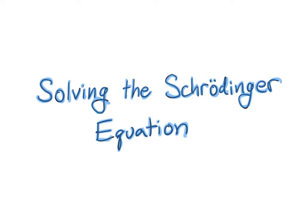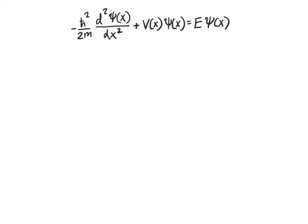As mentioned in the previous video, we're going to be focusing on the time-independent version of the Schrödinger equation, so we're only going to be worrying about systems that are in equilibrium. The left-hand term is related to the kinetic energy of the particle and therefore also to its momentum squared. The middle term is related to the potential energy of the particle due to the influences of any fields or forces acting on it. The right-most term represents the total energy of the system. At its heart, the Schrödinger equation is really simply a statement of conservation of energy.